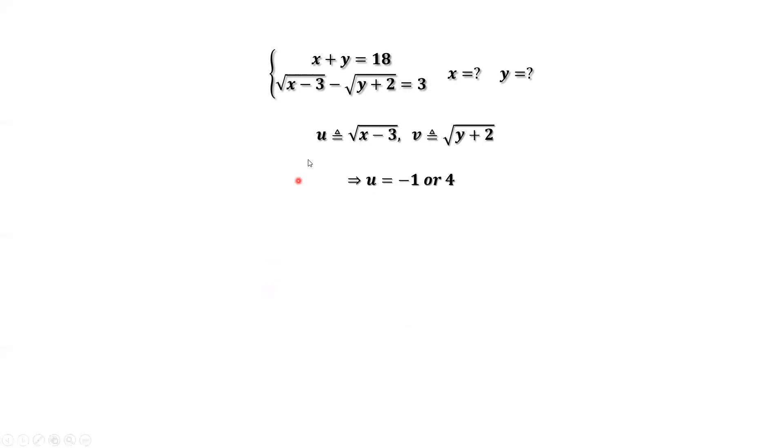Because u equals square root of x minus 3, u must be greater than or equal to 0. So negative 1 is impossible. This implies u does not equal negative 1. The only answer is u equals 4.